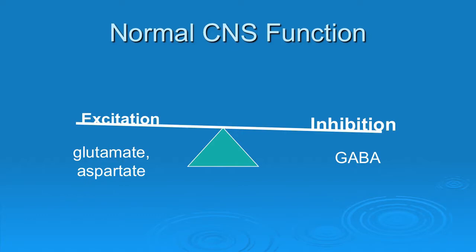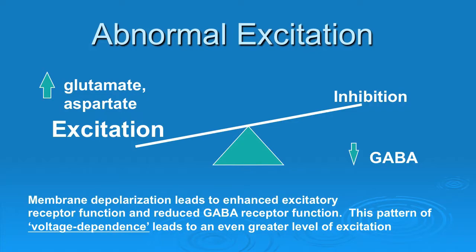Let me start with a very global picture of what we think is going on with seizures and with epilepsy. From a simplistic point of view, we think that there is an imbalance between excitatory transmission and inhibitory transmission in the brain. The primary excitatory neurotransmitters are glutamate and aspartate, and the primary inhibitory neurotransmitter is GABA. What may be occurring in a patient having seizures is a dramatic imbalance — a relative excess of excitatory neurotransmission, probably by glutamate mechanisms, or a relative failure of inhibitory neurotransmission, either an absolute deficiency of GABA or a relative insensitivity of different receptors.